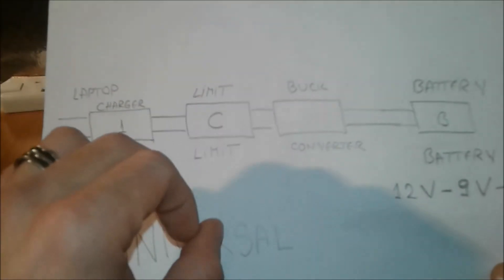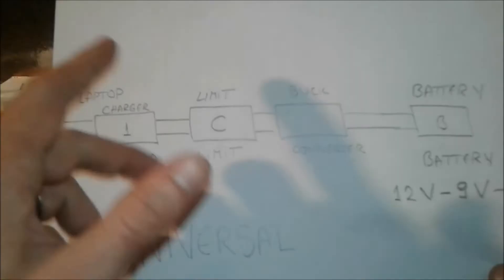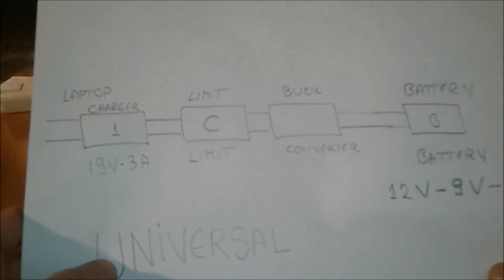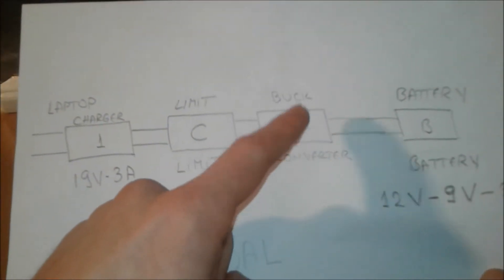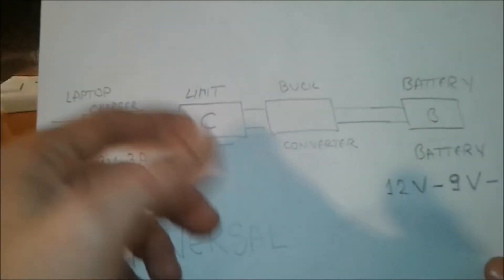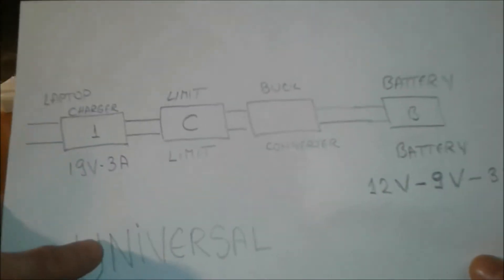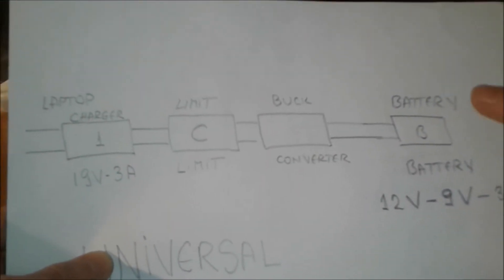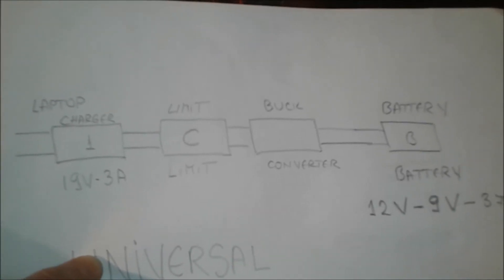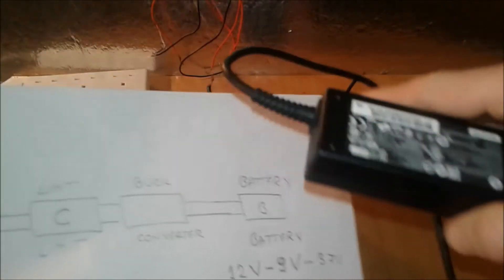I'm gonna show you how to make it - it's very simple, just uses one transistor and a couple of resistors. After that we need a buck converter that you can find on eBay or Amazon for a couple of bucks. And after that, the battery that we want to charge.